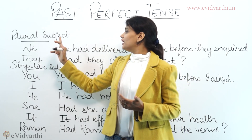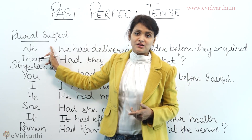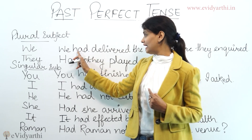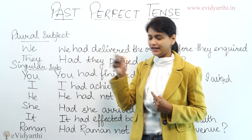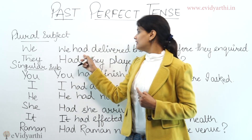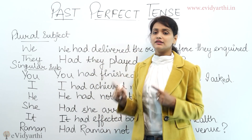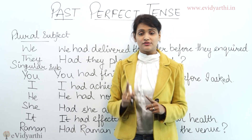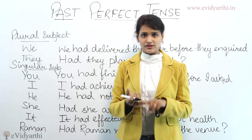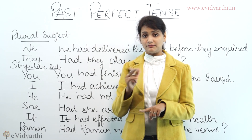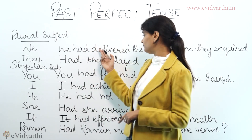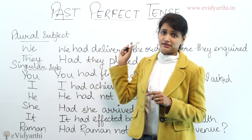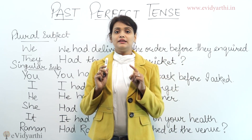The past perfect helping verb is 'had' — H-A-D. Along with 'had', we use the third form of the action verb. In simple past we use the second form, but in past perfect we use the third form. The rest of the sentence is the object.